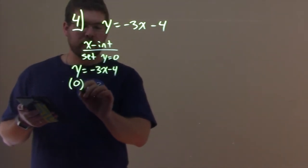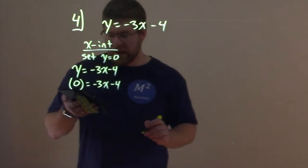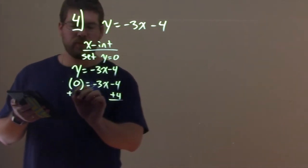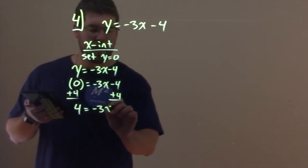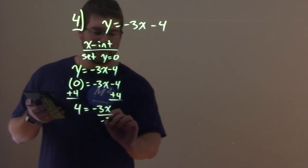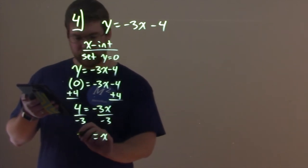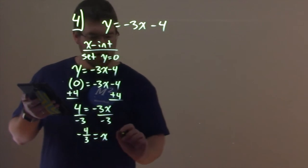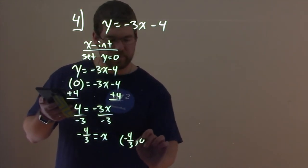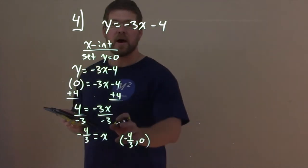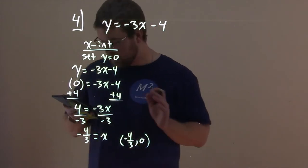So, zero for y, negative 3x minus 4. We want to add 4 to both sides. Positive 4 here equals negative 3x. Divide both sides by negative 3, and we have x by itself is equal to negative 4 thirds. And so, we have the coordinate point here, negative 4 thirds comma zero. Again, zero is the y value, and then we found negative 4 thirds is the x value that goes with it.